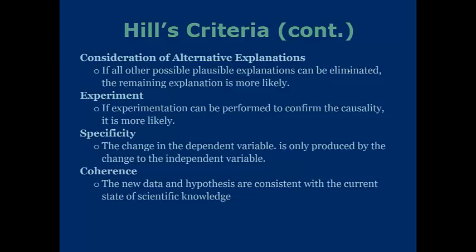Continuing with Hill's criteria, the last four factors start with consideration of alternative explanations. As a scientist, you have to take into account every possible reason — if all other explanations can be eliminated, your remaining explanation is probably more likely. If you can experiment to confirm this causality, it is also more likely. Specificity states that the change in the dependent variable is only produced by the change to the independent variable, suggesting a direct relationship. Lastly, coherence: the new data and hypotheses must be consistent with the current state of scientific knowledge.